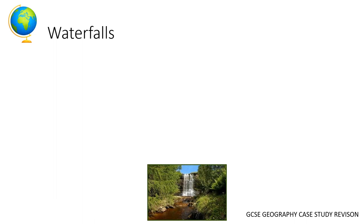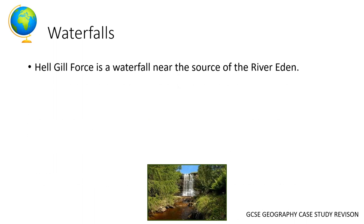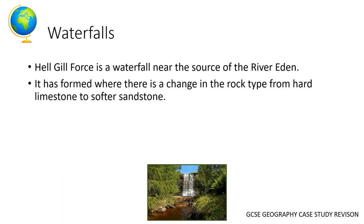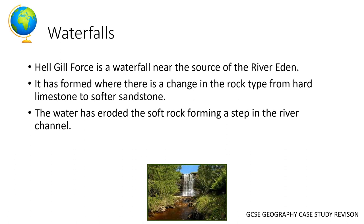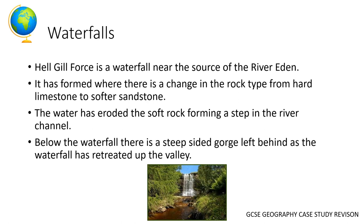What are some of the landforms in the river? The first is waterfalls — specifically a waterfall called Helgill Force. You need to know the names of specific landforms; you can't just say 'there are waterfalls,' you need to say Helgill Force. It's formed where there's a change in rock type from hard limestone to softer sandstone. The water has eroded the soft rock forming a step in the river channel, and below the waterfall there's a steep-sided gorge left behind as the waterfall has retreated up the valley. The key detail to remember is limestone and sandstone — those are the two rock types the examiner will be looking for.